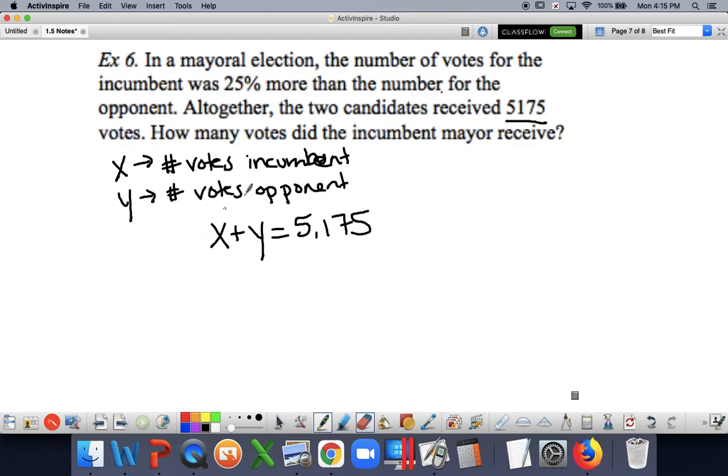Now, the other equation can be a little bit trickier. I know that the opponent received fewer votes. So the incumbent had more votes, 25% more votes than the number for the opponent. So what I do is I say, my x value, my incumbent number of votes, I'm going to take the amount of votes that the opponent got plus another 25% more of what the opponent got. So basically, if I want to rewrite this, combine my like terms, it's x is equal to 1.25y. So these end up being my system of equations, my two equations right here.